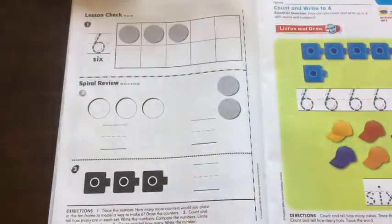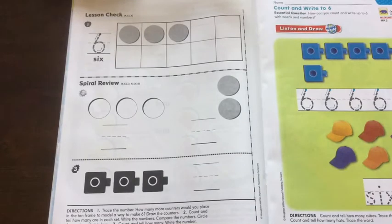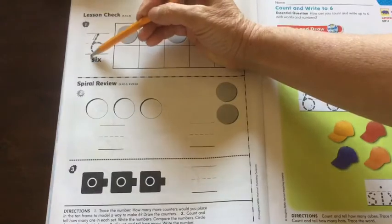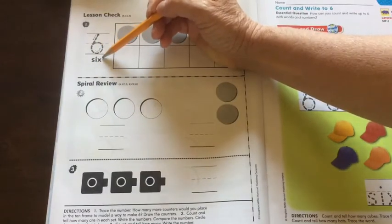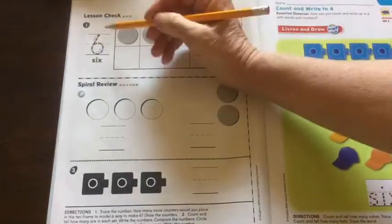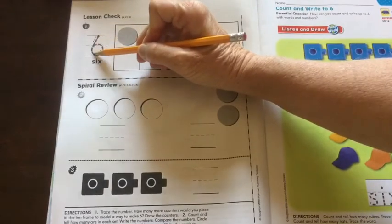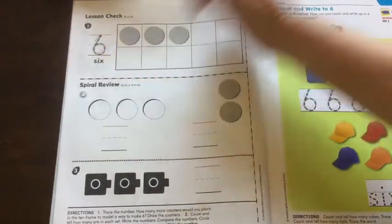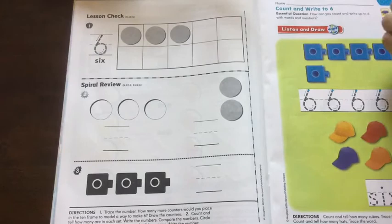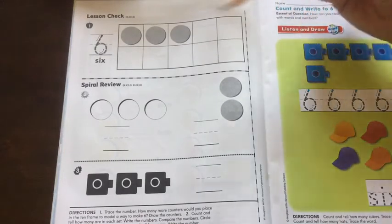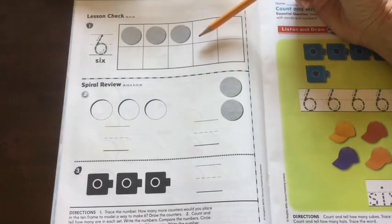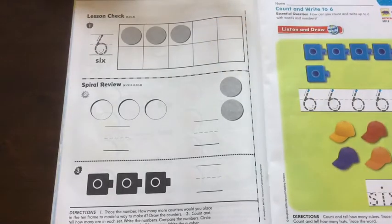Number 1. Trace the number. Oh. What number is that? 6. Yep. We can even read it. S. I. X. 6. Down and a loop. 6. Rolls a hoop. It reads. How many more counters would you place in the 10 frame to model a way to make 6? Well, let's see. How many do we have?